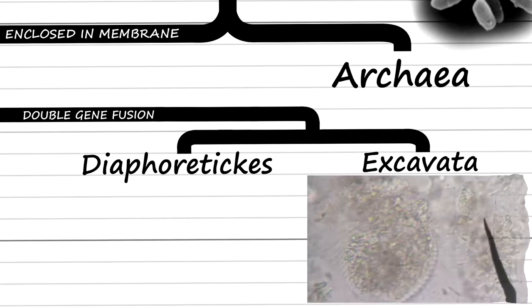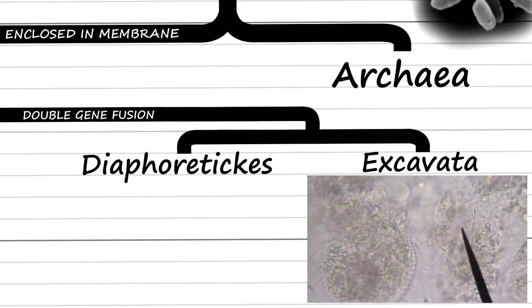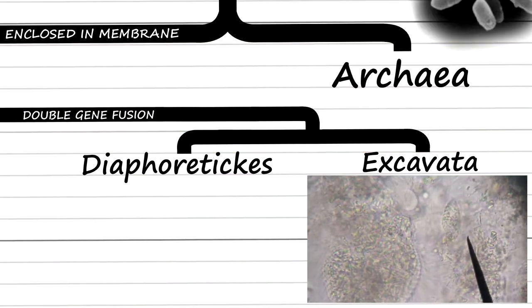Excavata split from the main lineage first. Most notably, these include Acrasidae slime molds, which is still single-celled life but can form colonies which resemble multicellular life.